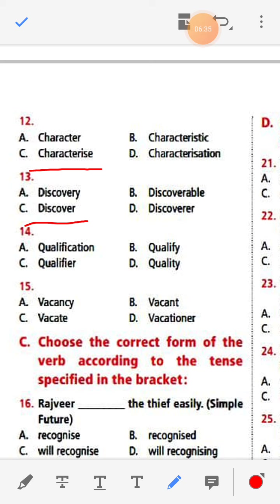Number fourteen: Qualification, qualify, qualifier, quality. The answer is 'qualify'. Number fifteen: Vacancy, vacant, vacate, vacationer. The answer is 'vacate'.